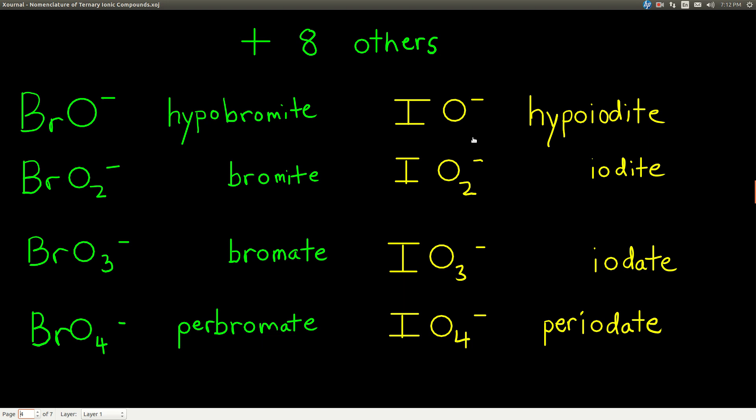And the same pattern is followed for iodine. Hypoiodite, iodite, iodate, periodate. All 1 oxygen, 1, 2, 3, or 4 oxygens, all negative 1 charges. The names still follow the same pattern. So memorize these guys too.